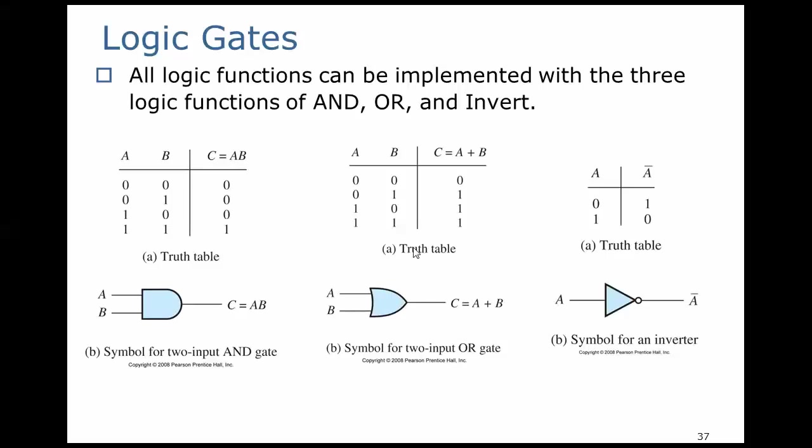In contrast, we have the OR gate. Here, the output is true whenever either A or B, or both A and B, are true. The only time that it is false is when both inputs are false.